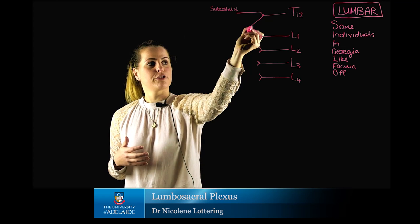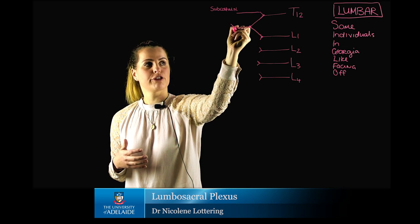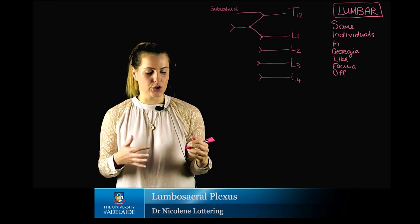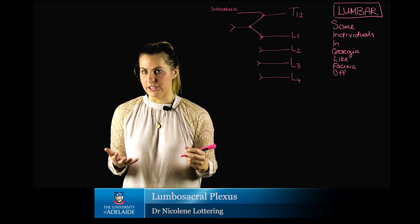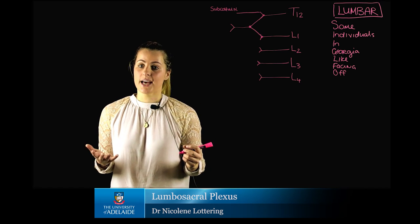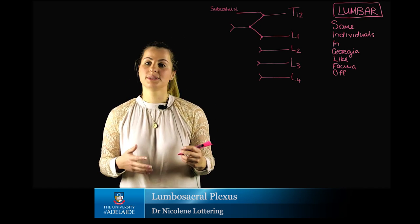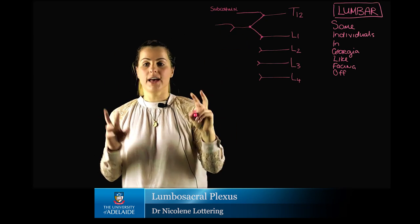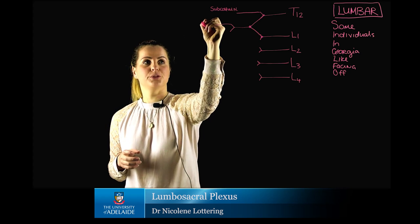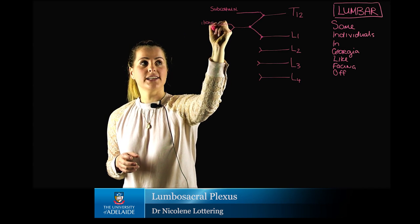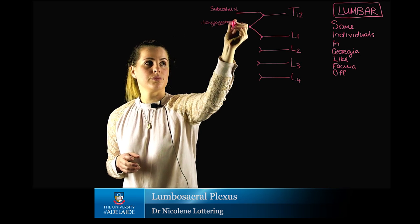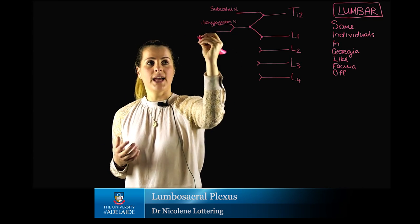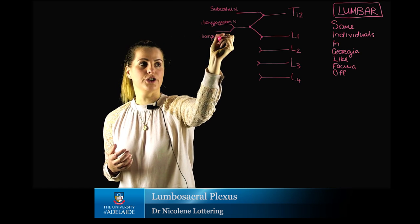Stemming from here we are going to give rise to two peripheral nerves. Please note this is variable depending on which textbook you refer to, but according to Grey's Anatomy, the 40th edition, stemming from T12 and L1 we are going to have our 'individuals,' which is the iliohypogastric nerve, and then the second one, 'in,' is going to be our ilioinguinal nerve.